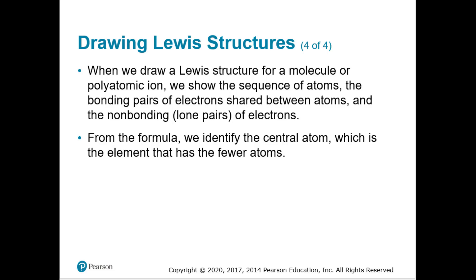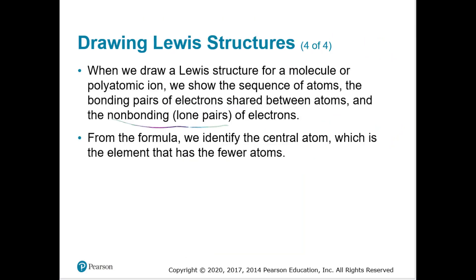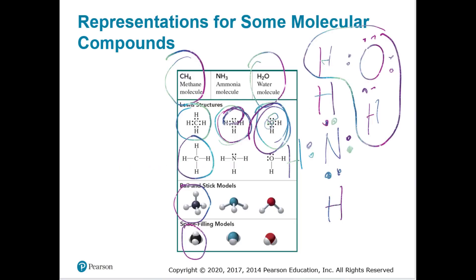When we draw a Lewis structure for a molecule or polyatomic ion, we show the sequence of atoms, the bonding pairs of electrons shared between atoms, and the non-bonding or lone pairs. In NH3, the top two dots are non-bonding electrons. In water, there are two sets of non-bonding electrons. From the formula, we can identify the central atom — it's the element with fewer atoms. In CH4, carbon is the central atom.